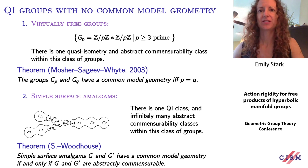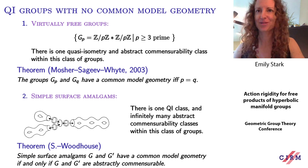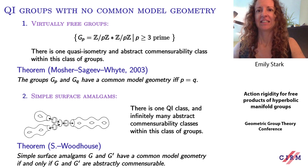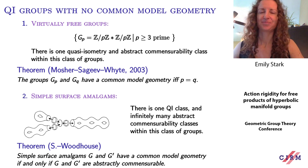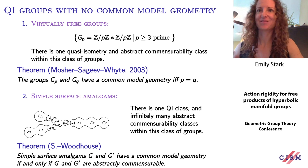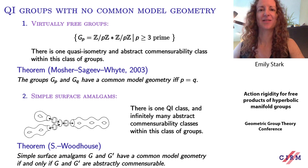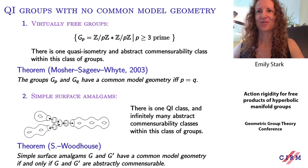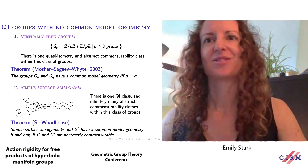In previous work with Woodhouse, we showed that these amalgams are action-rigid: if two simple surface amalgams G and G prime have a common model geometry, this happens if and only if G and G prime are abstractly commensurable. Because there are infinitely many commensurability classes inside one quasi-isometry class, you have groups that are quasi-isometric but cannot act on the same proper geodesic metric space. It is not known if these groups virtually have a common model geometry — conjecturally they don't, but our proof used that there was just one singular curve.